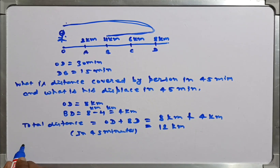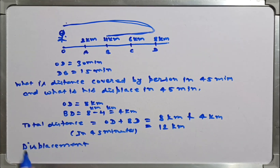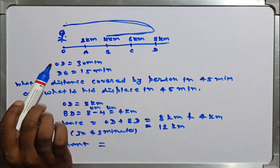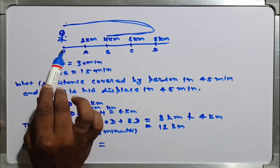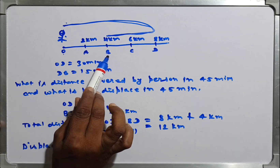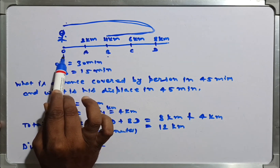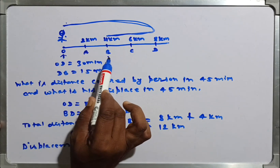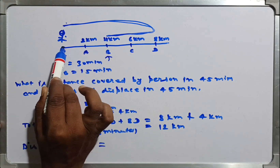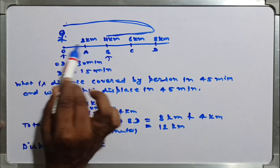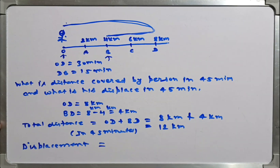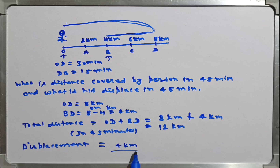What about displacement of that person in 45 minutes? Displacement depends upon the initial and final position. Initially he is at O and finally he is at B. The distance between O and B is 4 km. So the displacement of that person in 45 minutes is only 4 km.